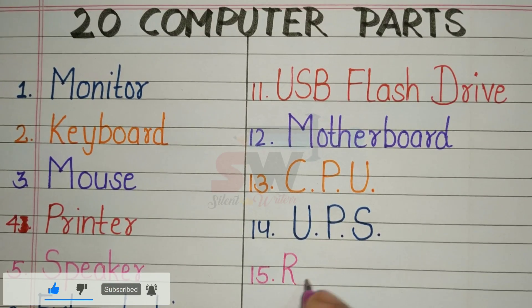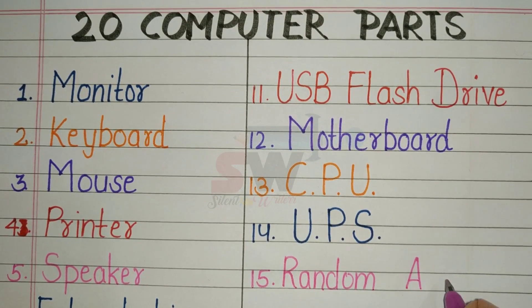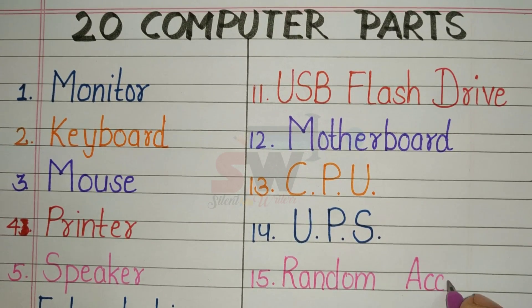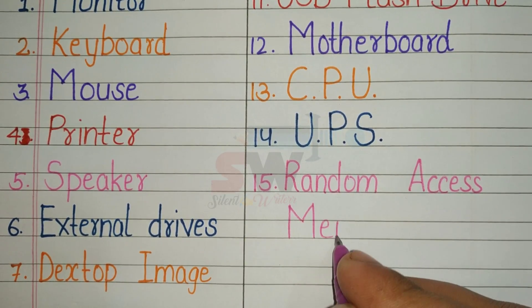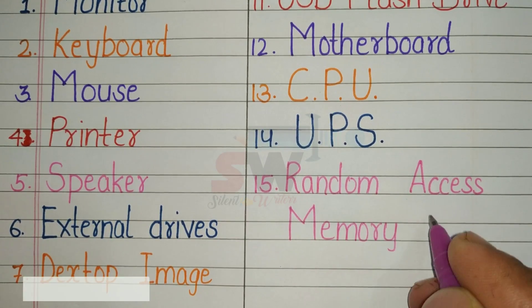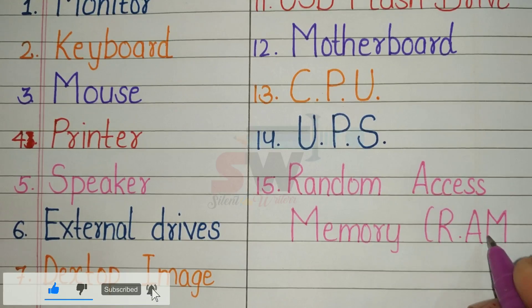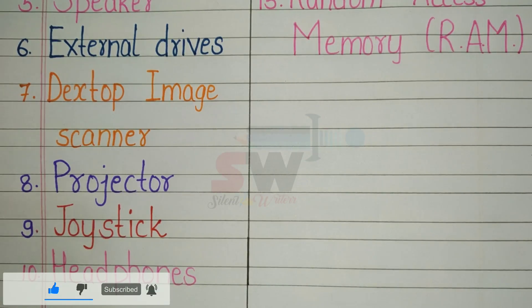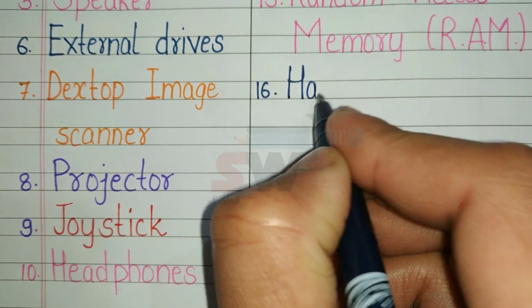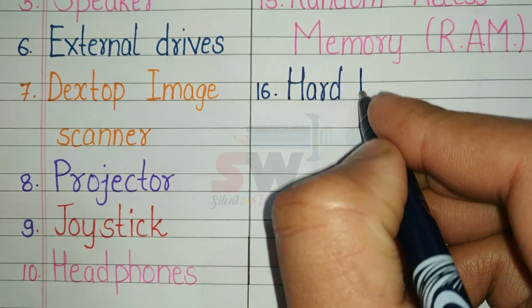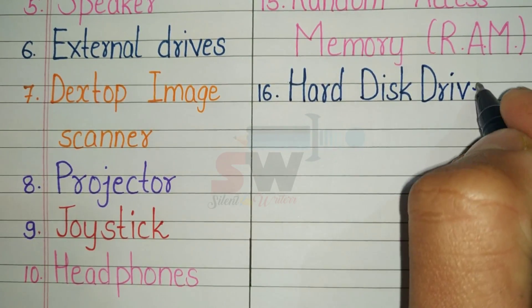15th: random access memory, RAM. 16th: hard disk drive.